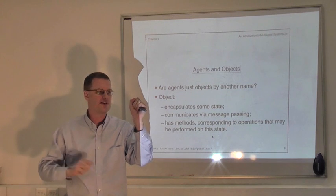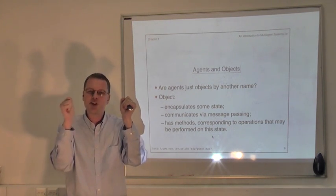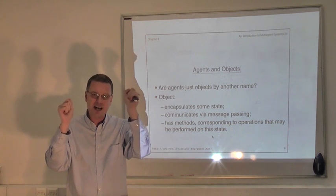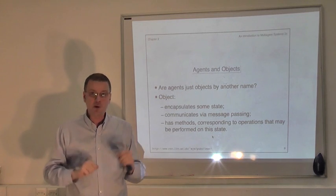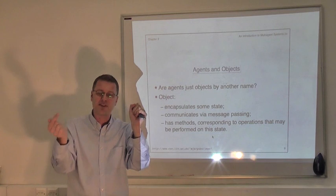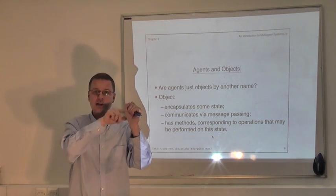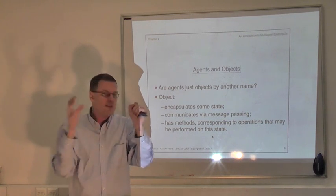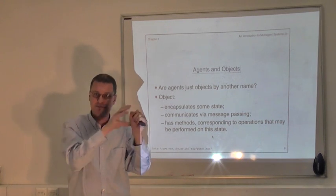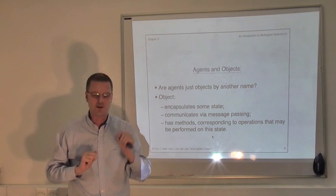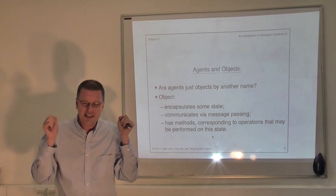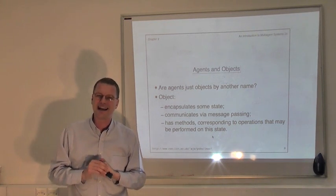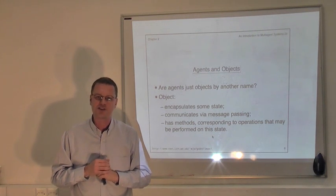So here's the question: where does the decision lie about whether that method actually gets invoked? I would argue that the decision lies with the object that invokes it. If O1 provides a public method available to others, it has no control over whether that method gets invoked — it just does if O2 decides to invoke it. So in that sense, objects are not very autonomous. They have no control over their own actions in the way that we've been talking about agents having choices about what actions to perform.